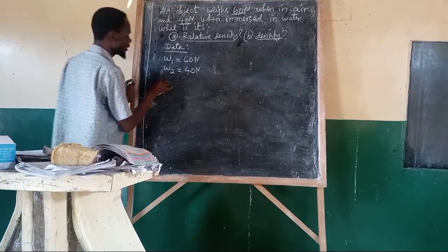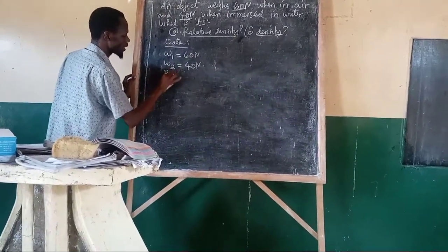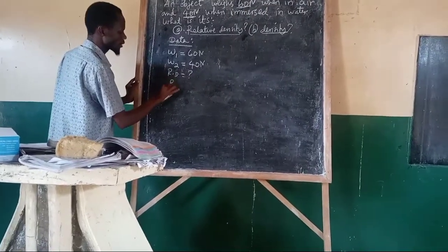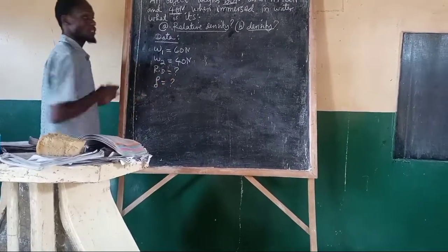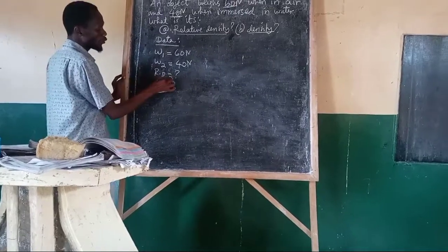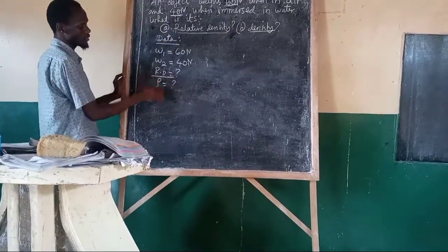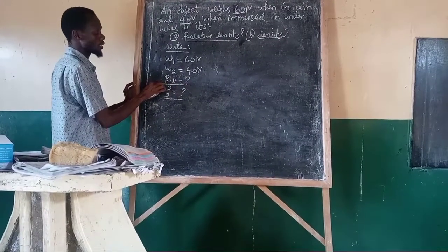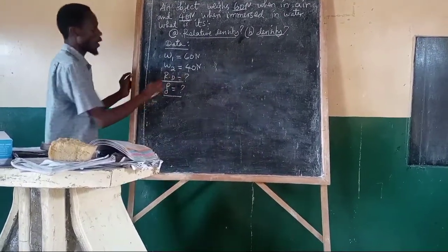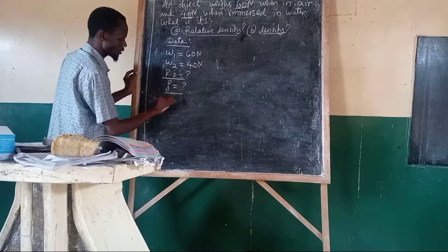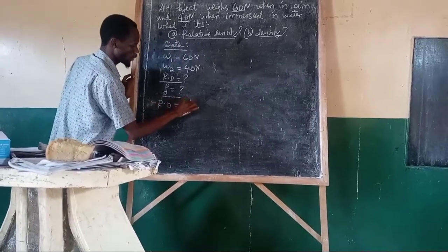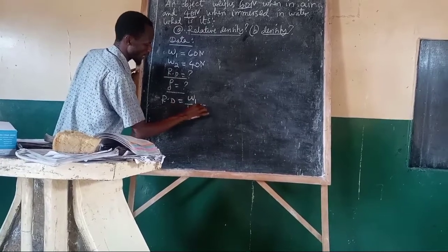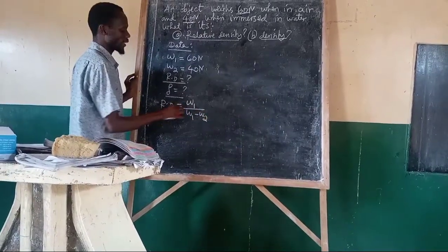Therefore, the first question is to determine relative density, and the second is to determine density of the substance. To determine relative density and density, we must start with relative density of the substance by using Archimedes' principle. Relative density is equal to W1 over W1 minus W2.